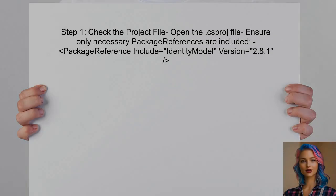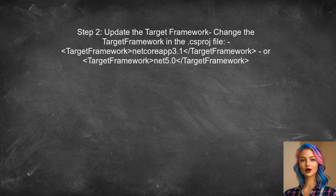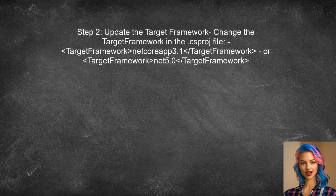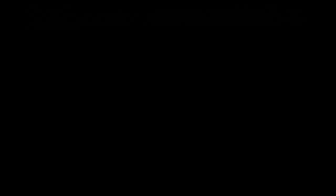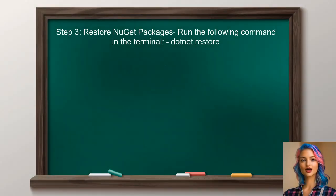To resolve the conflict with HttpClient, first check the project file for any unnecessary references — it's important to ensure that only the required packages are included. Next, consider updating the target framework. Changing the target framework to .NET Core or .NET 5 can help avoid conflicts with NetStandard. After updating the target framework, restore the NuGet packages to ensure all dependencies are correctly aligned with the new framework.